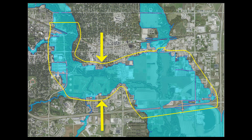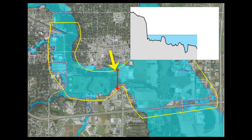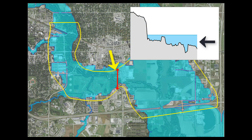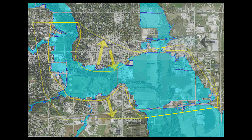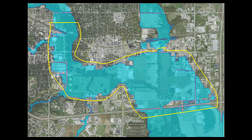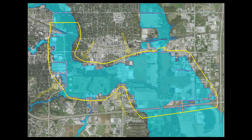Lateral domain limits should encompass the inundation area of the largest discharge to be modeled. If the lateral extents are too small, the edge of the model acts as a wall, similar to 1D models. Too large of lateral extents can result in an inefficient model.